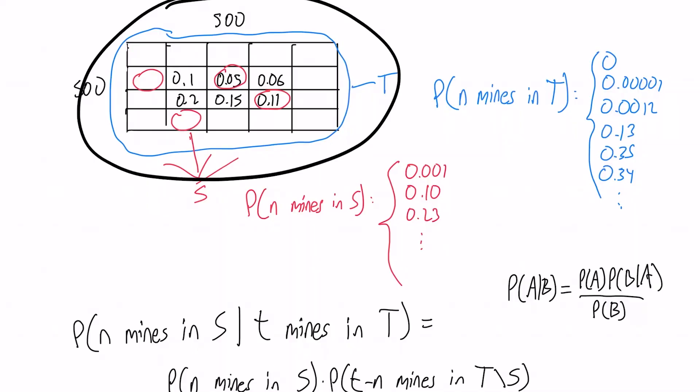This is a solution to problem sweepstakes. In this problem, we are given a rectangular minefield. As you can see, we have a minefield here with particular probabilities that each of the squares has a mine in it, and these probabilities are all independent.